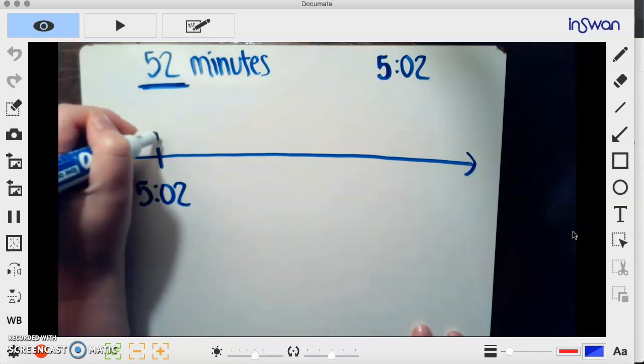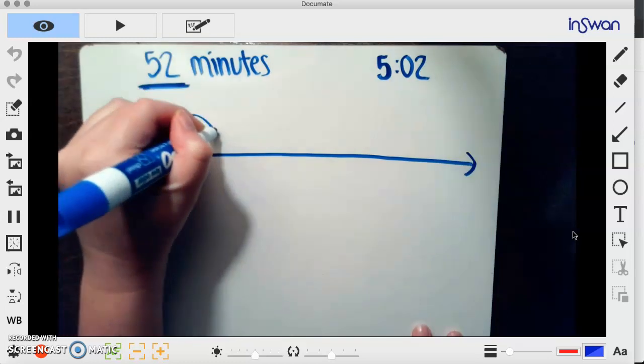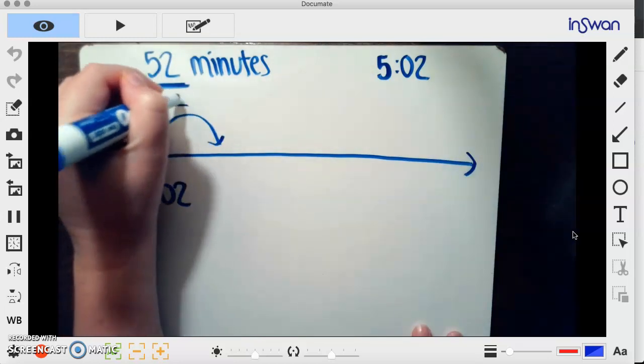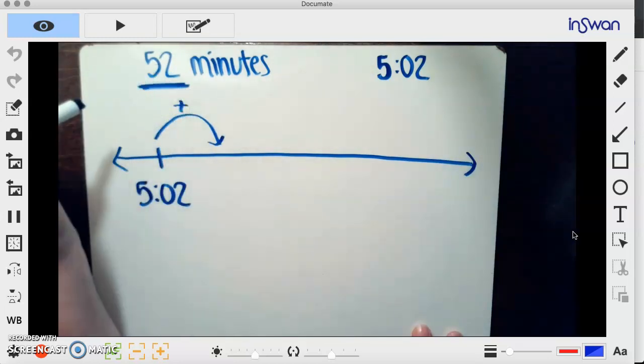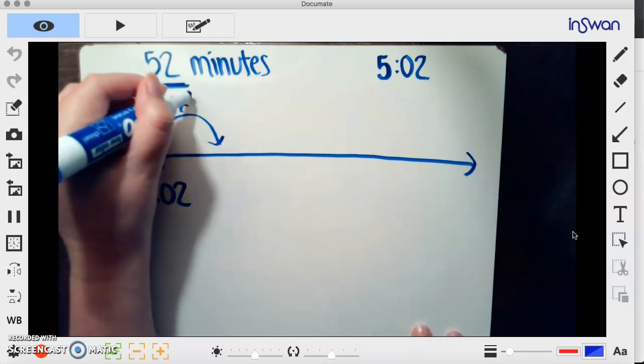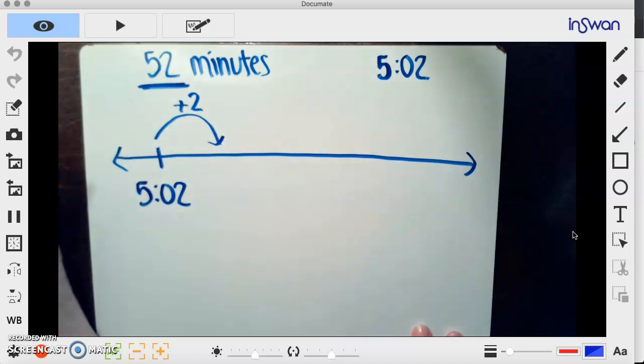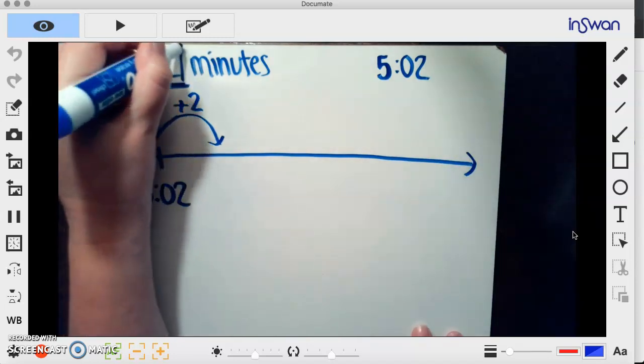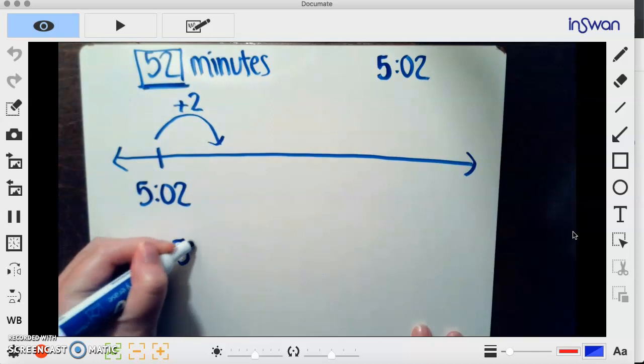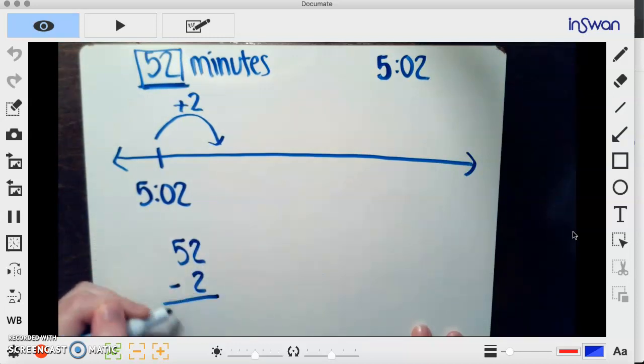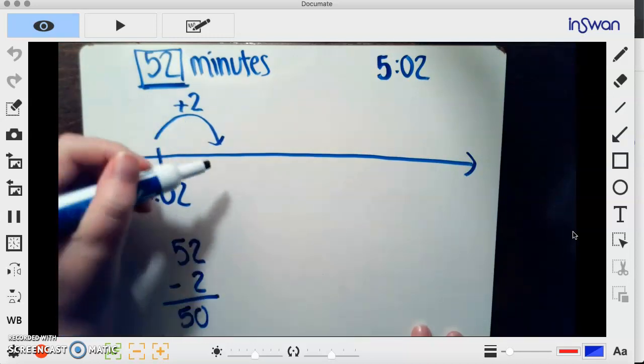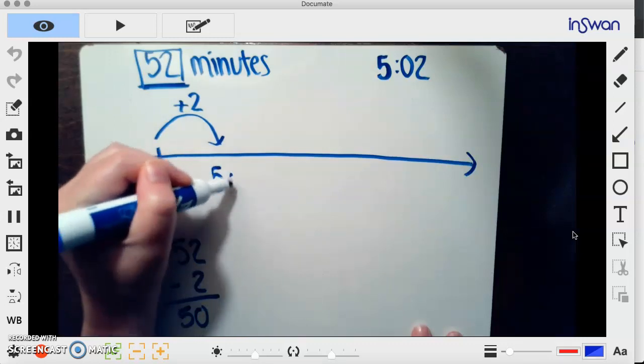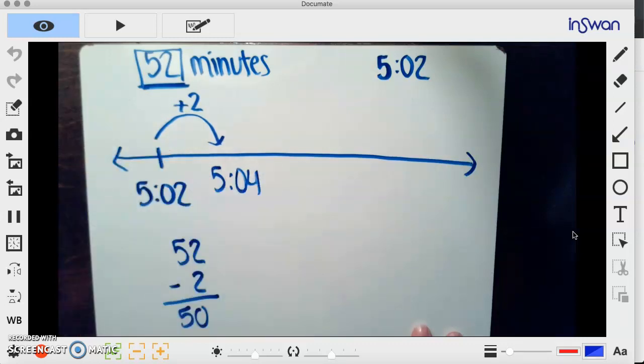I need to make sure that I'm doing 52 minutes. So let's start from here, and I want to get to a little bit of an easier number to jump from. So I'm going to jump 2 minutes. So I have 52 minus 2—I have 50 minutes remaining now—and now I am at 5:04.